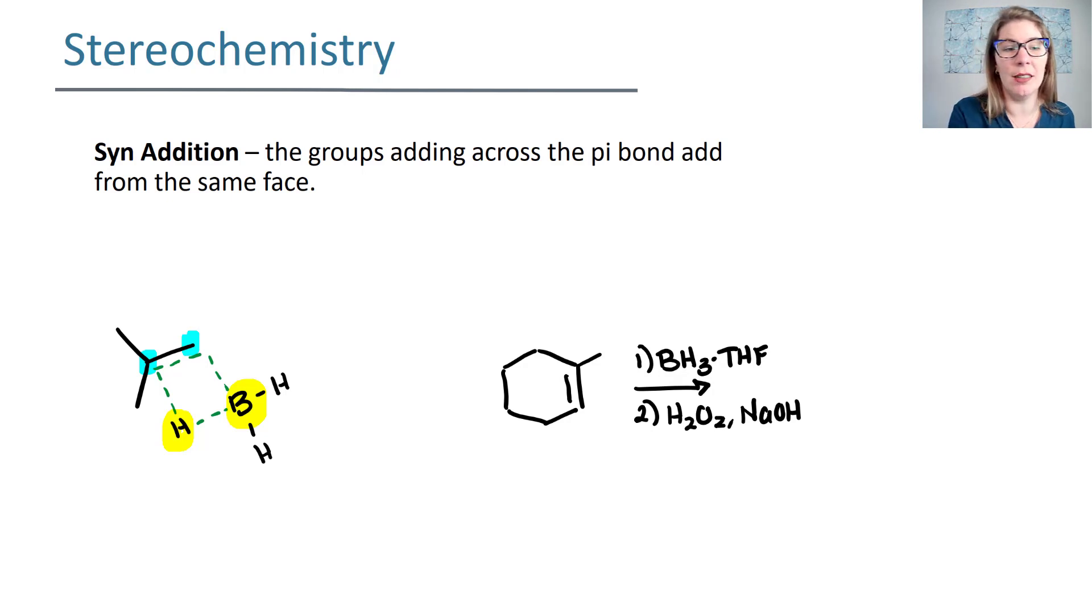The easiest way to illustrate this, and I'm going to separate these ideas here, is with a ring because with a ring it's easiest to see. If we have a ring, your BH2, which is eventually going to be replaced by an OH, is going to add to the less substituted side. And if it's wedge, then that means that the H that's adding is also wedge.